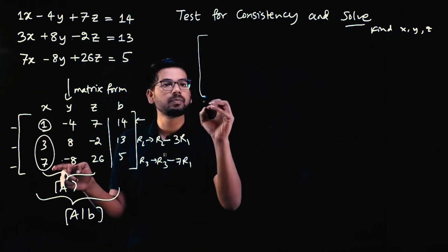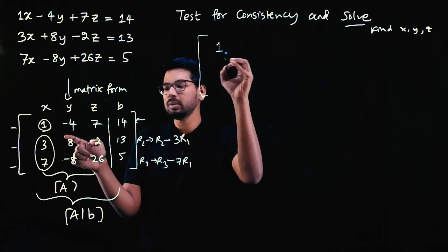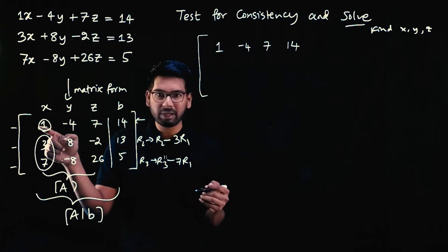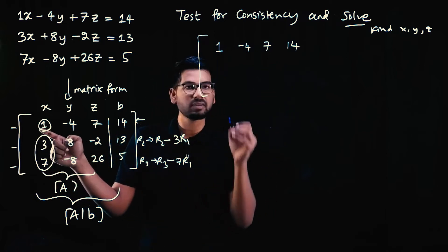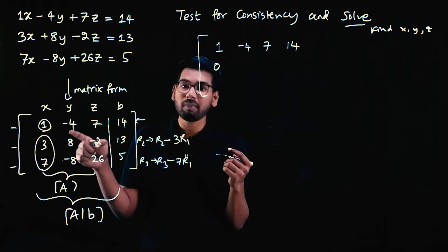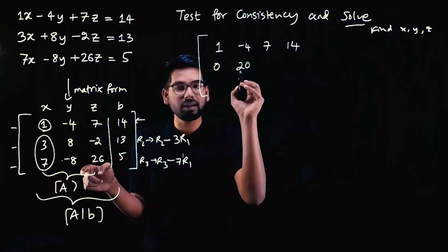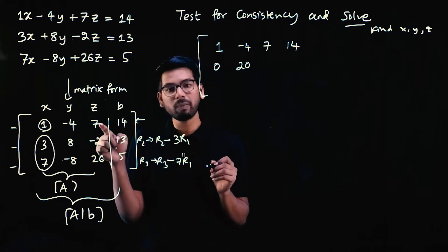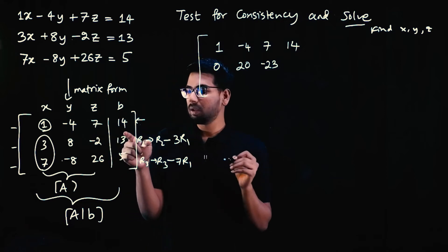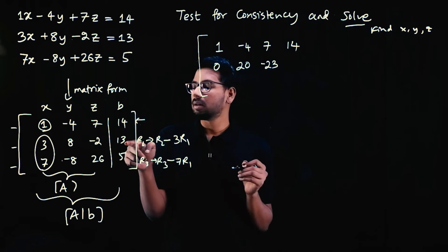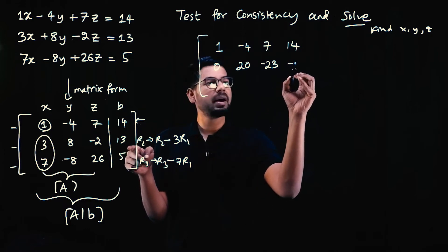After row operation R2 minus 3×R1: first element 3 minus 3 is 0. Second element: 8 minus (3×(minus 4)) = 8 plus 12 = 20. Third element: minus 2 minus (3×7) = minus 2 minus 21 = minus 23. RHS: 13 minus (3×14) = 13 minus 42 = minus 29.